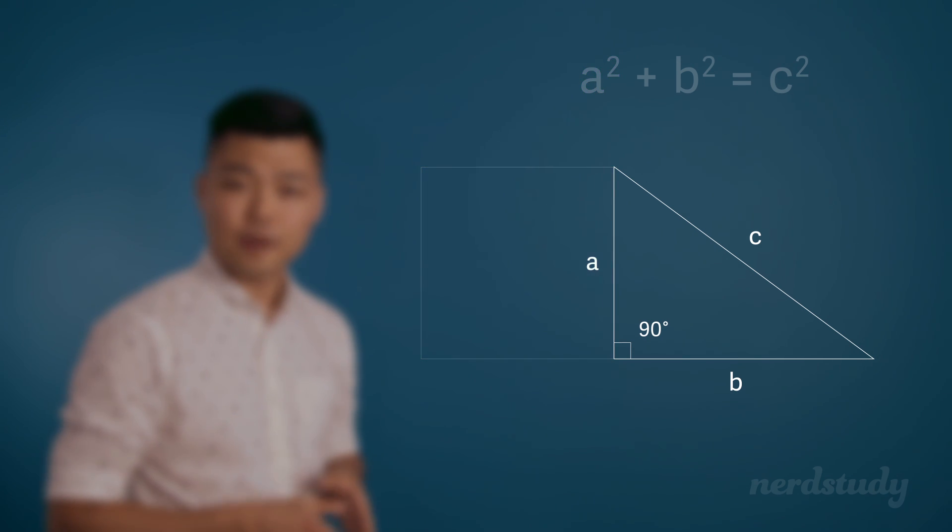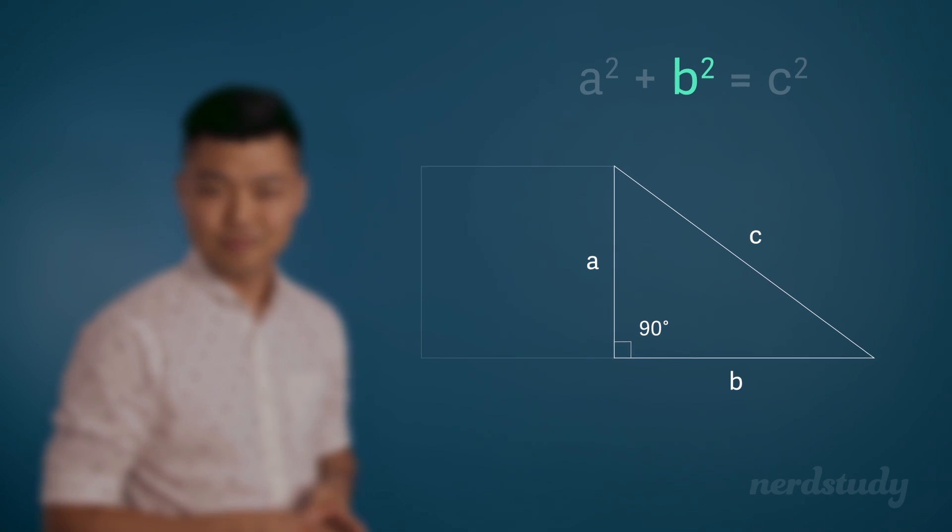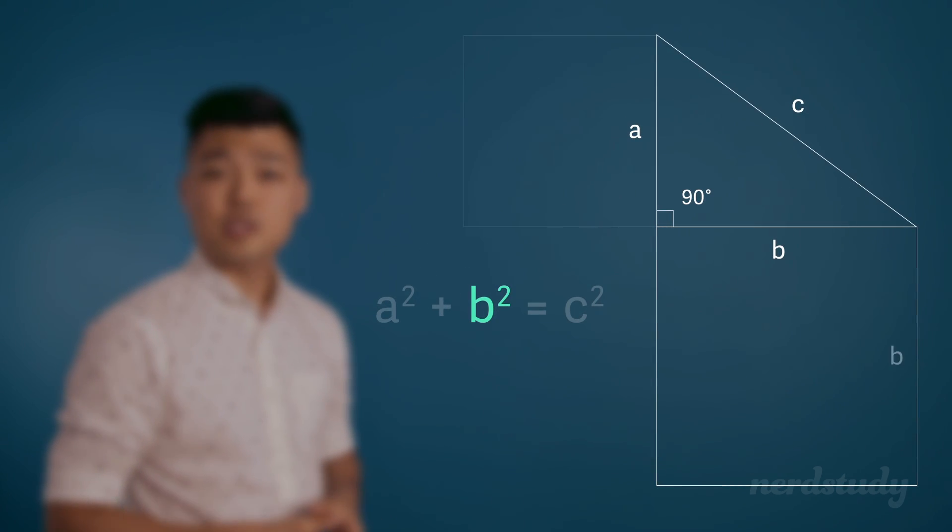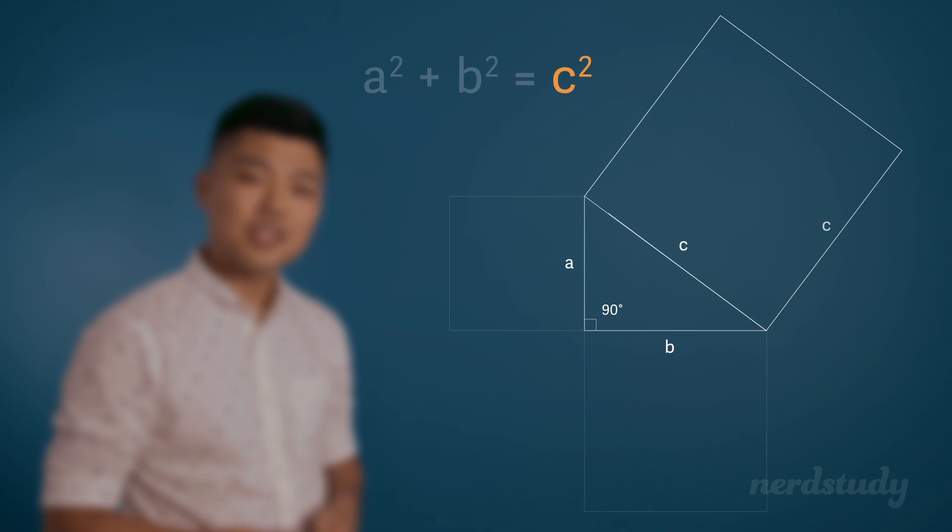And since we went through all of that, realizing what b² would mean becomes rather simple. b² is just b times b, making it the area of this square right here. And naturally, c² is just c times c, making it the area of this square right here.